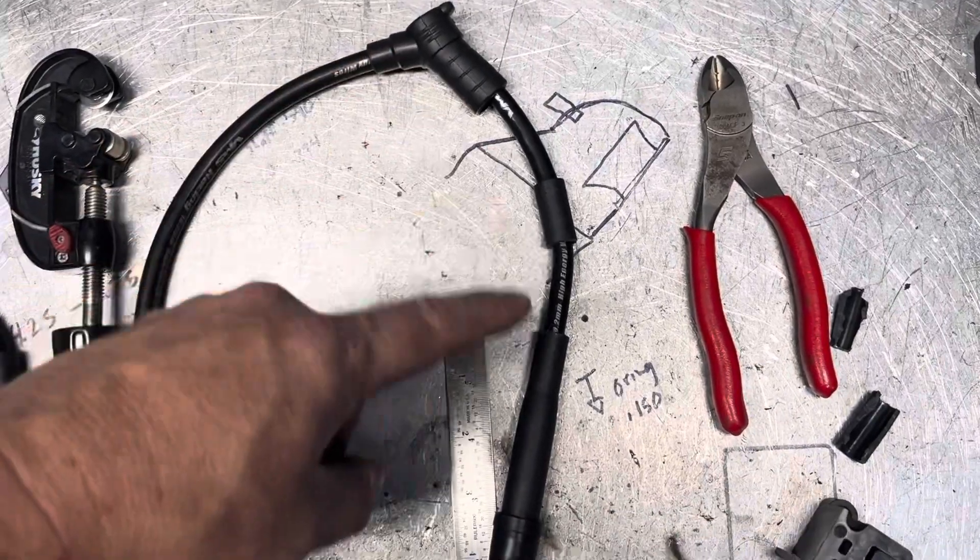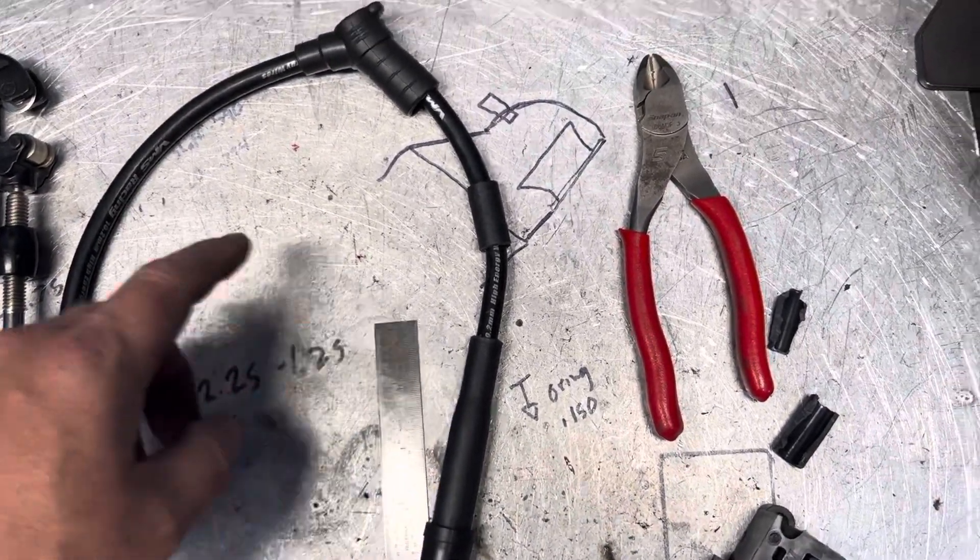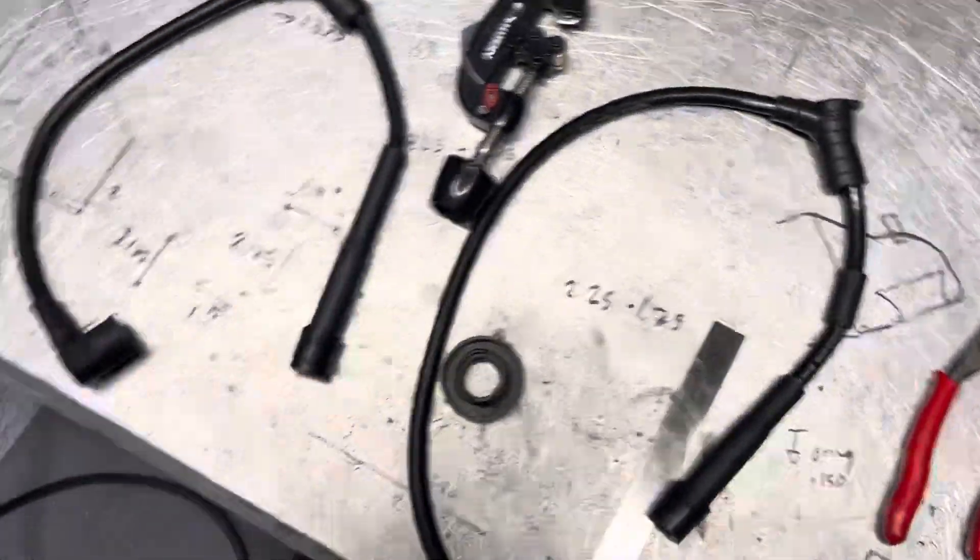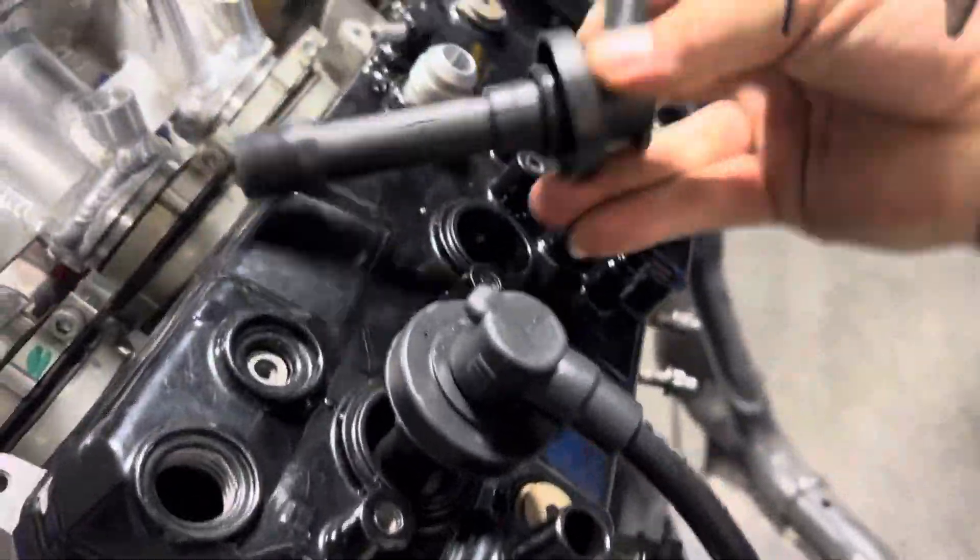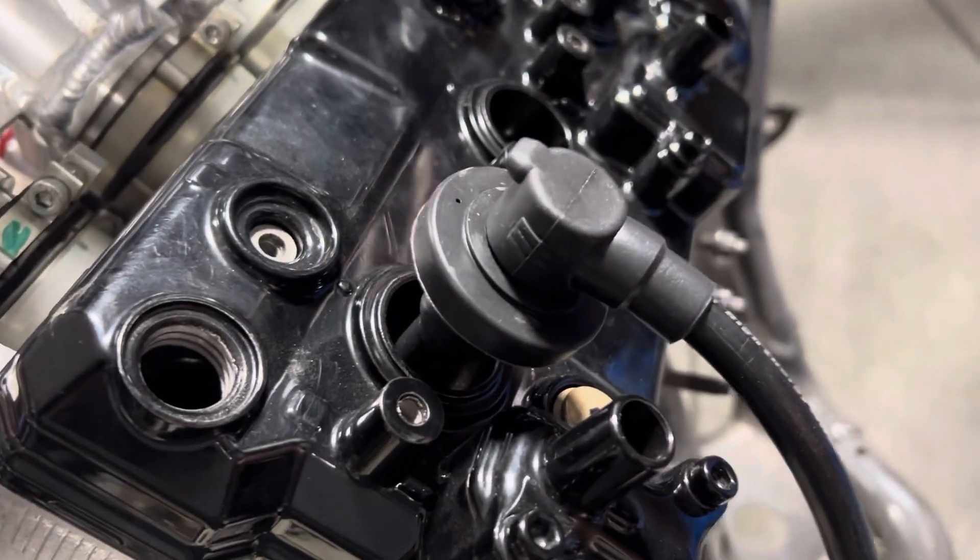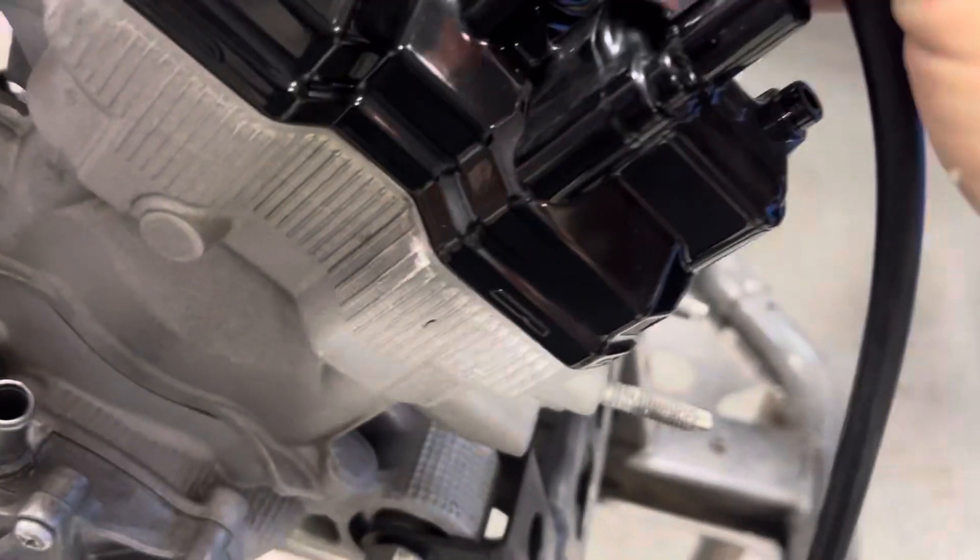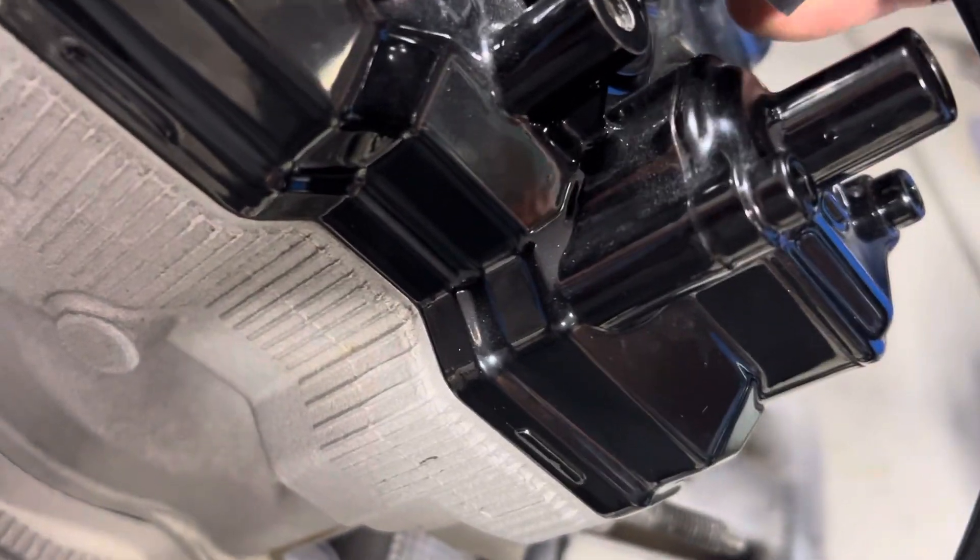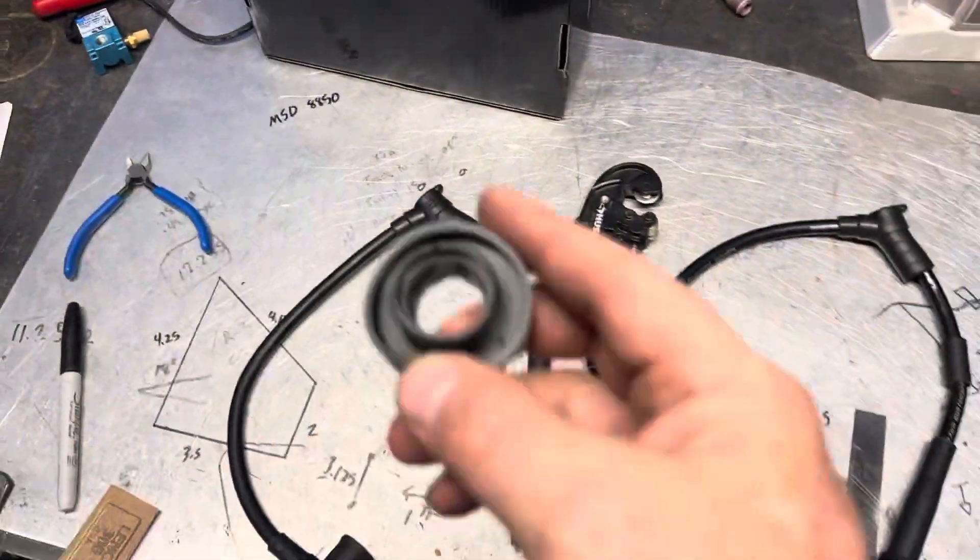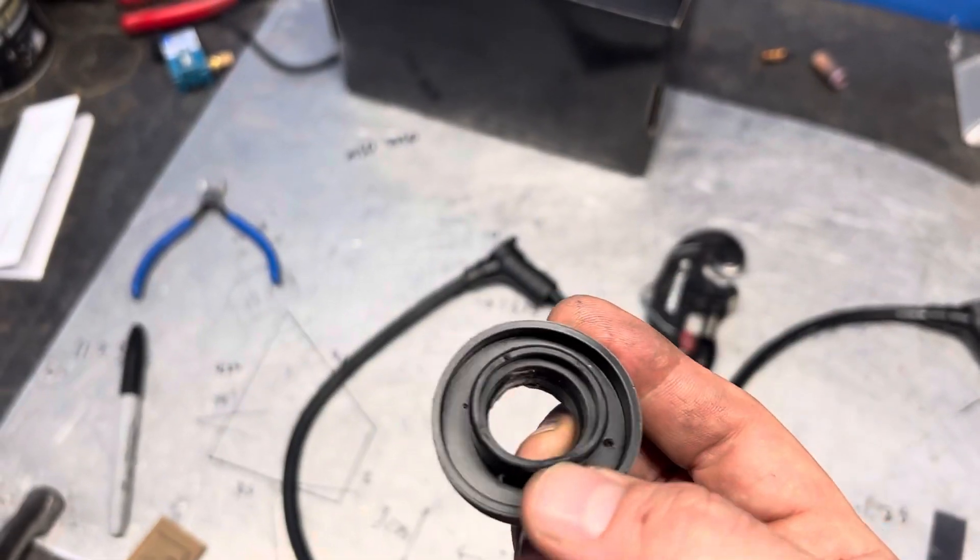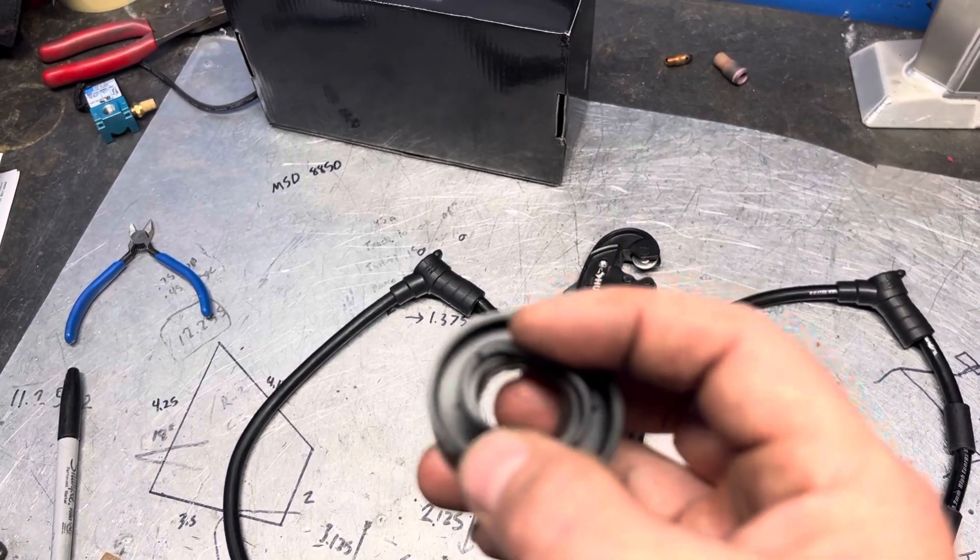Then slide your boot back down onto your new length here. Reinstall the rubber cap from that end and you end up with a wire that is the correct length for your Yamaha cylinder head. The reason I like these VMS's is that this rubber boot is perfect. It's not solid around the insulator, it's hollow right here. That allows these to squish pretty good.